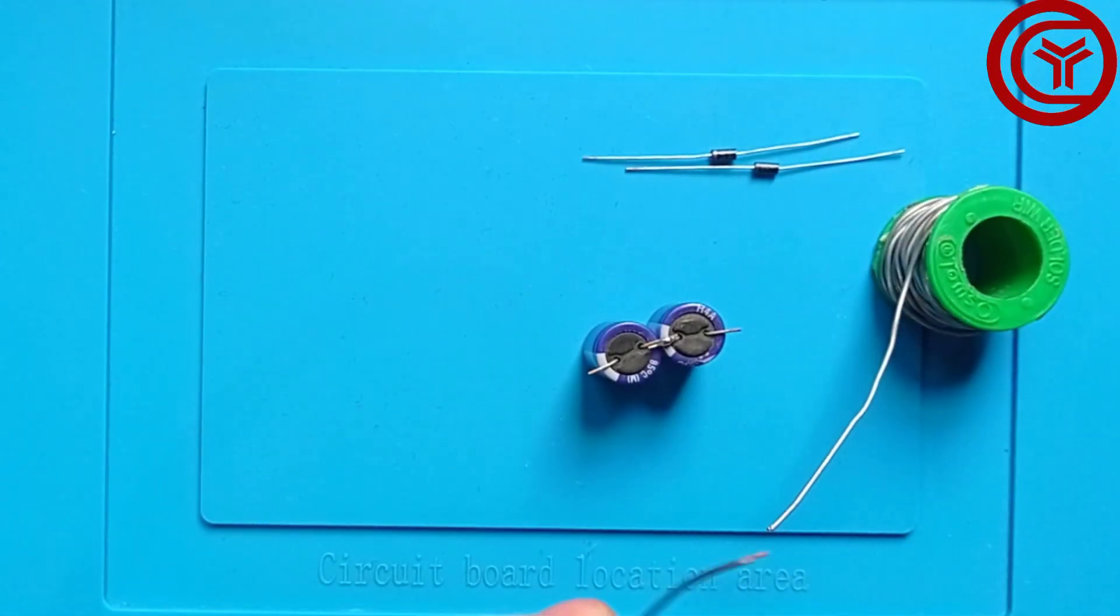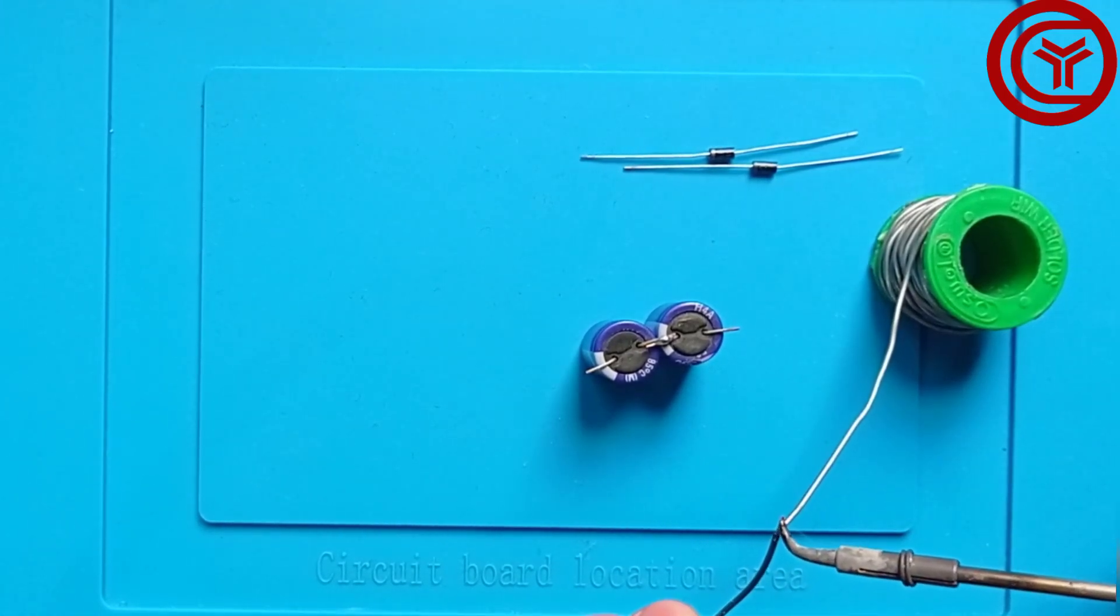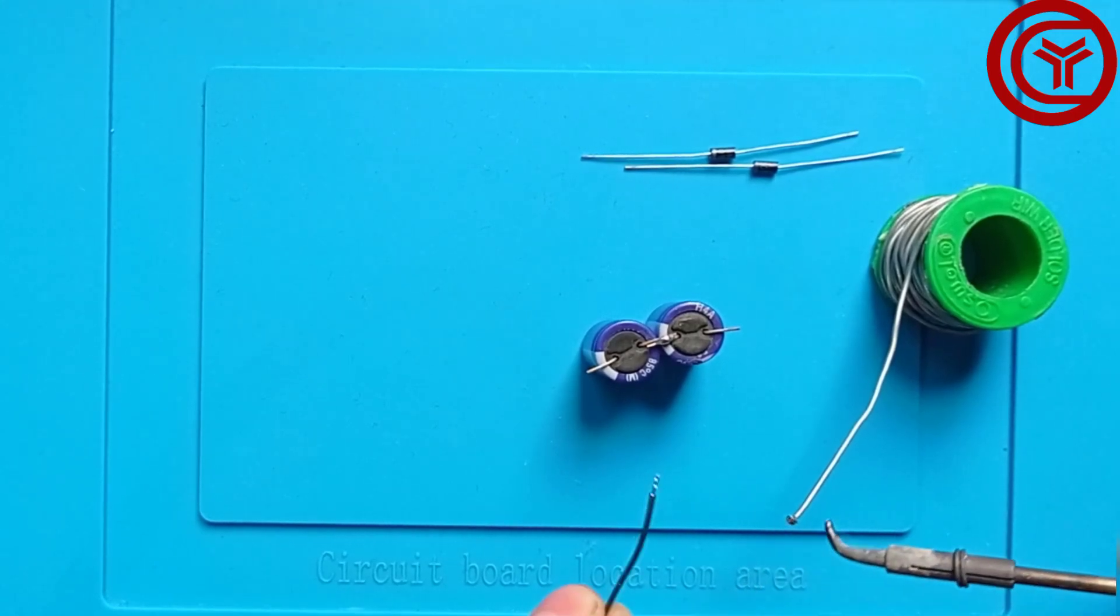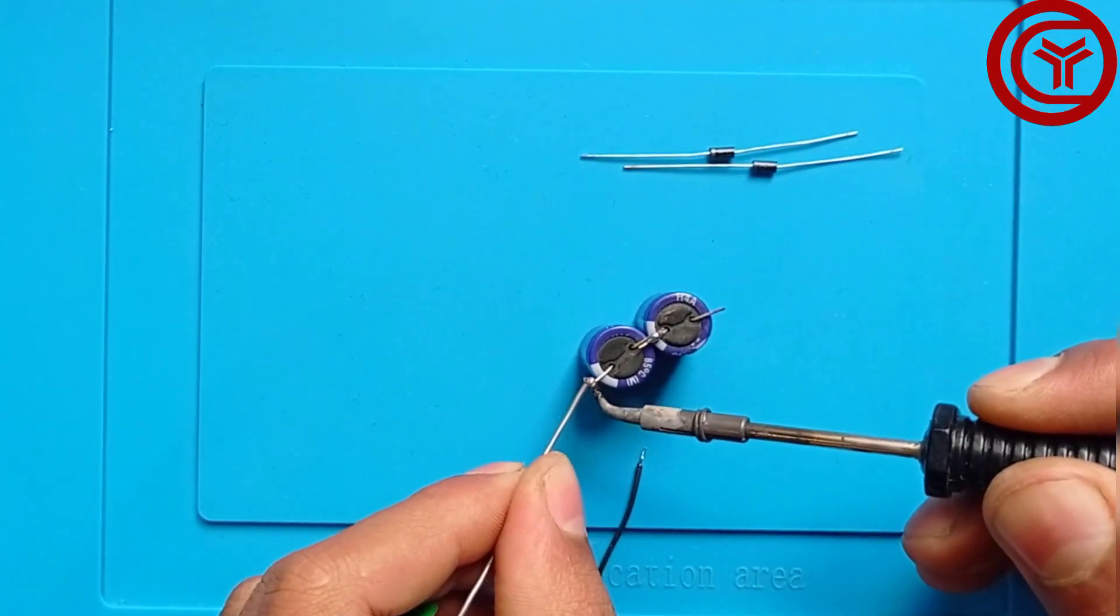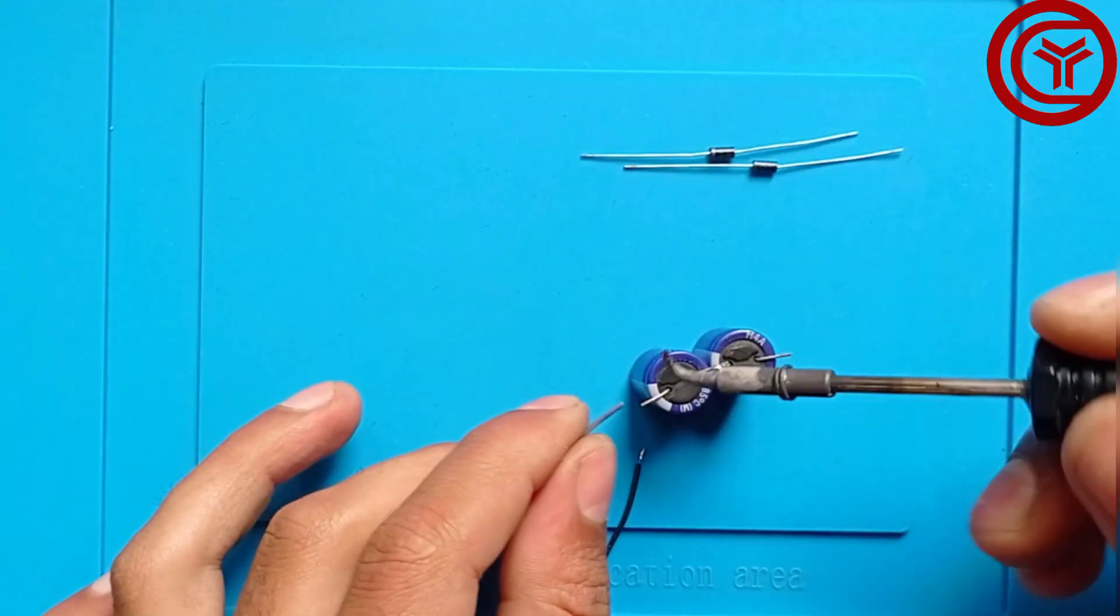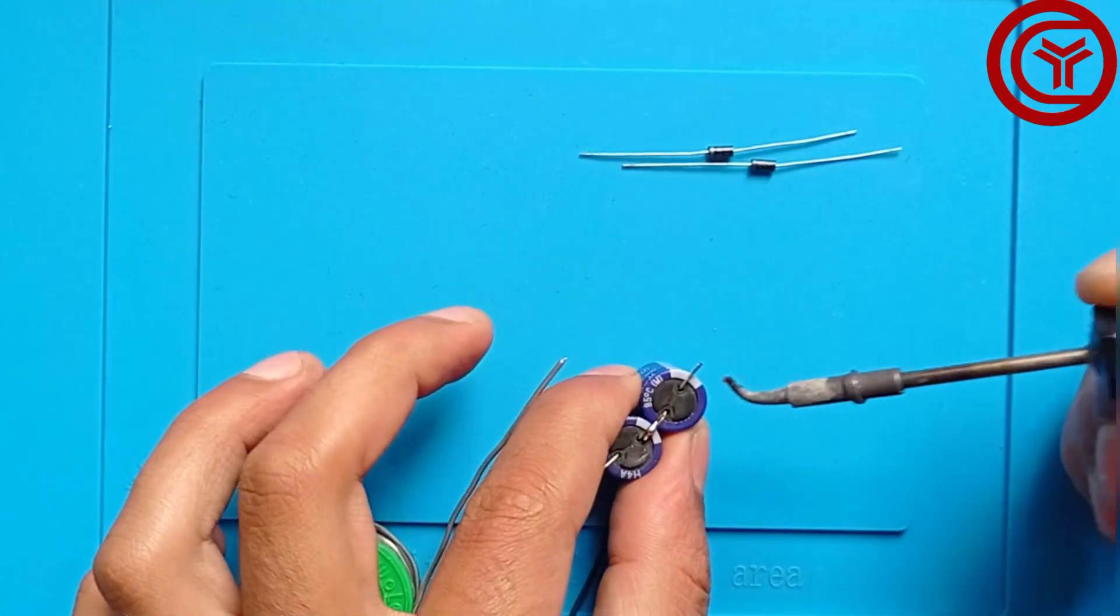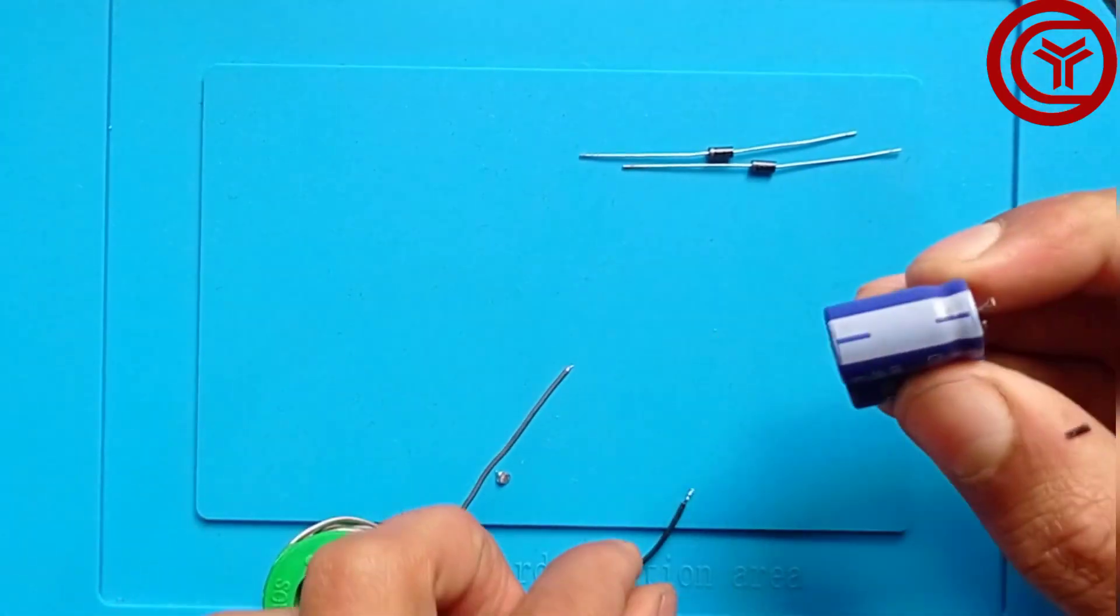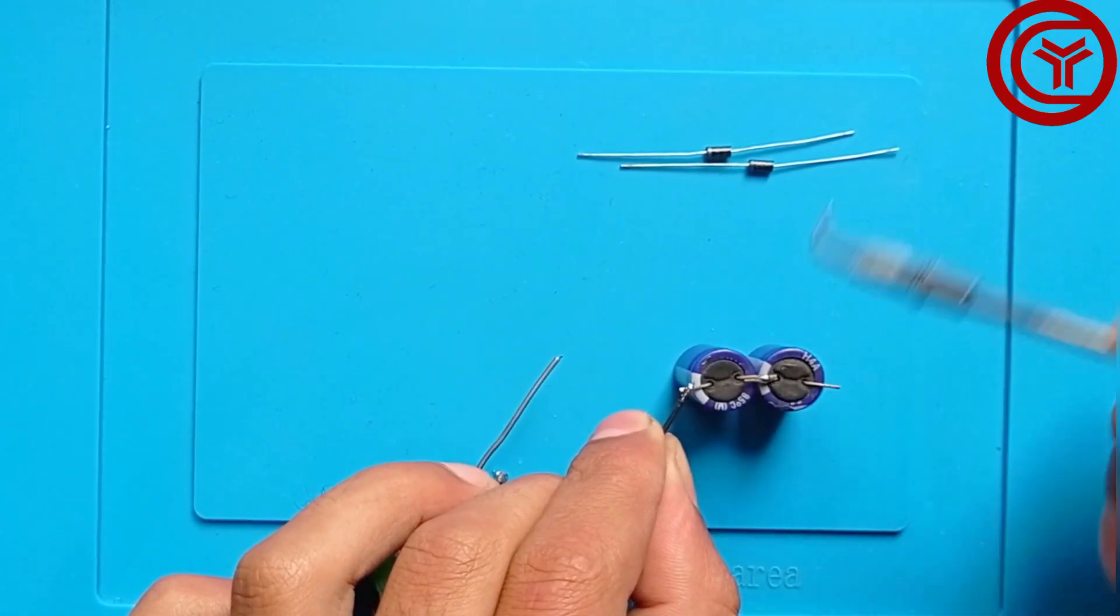Now we'll take two wires, one red and one black, for the positive and negative output. We'll solder the black wire on the negative of the capacitor.